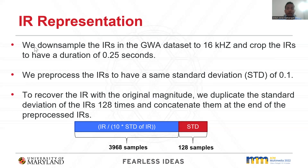We down-sample the IRs in the GWA dataset to 16,000 Hz and crop the IRs to have a duration of 0.25 seconds. The standard deviation of the ground truth impulse responses varies in the order of 10 to the power of minus 12 to 10 to the power of minus 2. We notice that it is hard for Mesh2IR to learn from such a dataset with high dynamic range. To overcome this, we normalize the impulse responses to have a constant standard deviation of 0.1. To recover the original magnitude, we duplicate the standard deviation 128 times and concatenate it at the end of the pre-processed impulse responses.